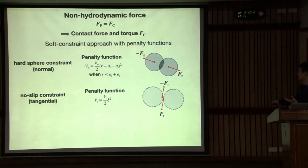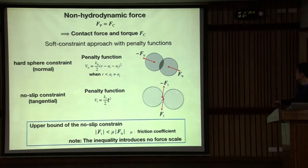Of course, this tangential force can be not so strong. We can introduce some upper bound of the no-slip constraint. This may be called friction law. The coefficient mu is friction coefficient. But this is just inequality. This does not introduce any specific force scale. This makes it a bit simpler.